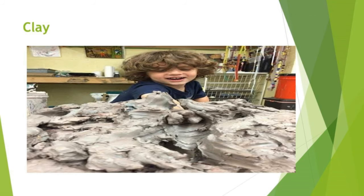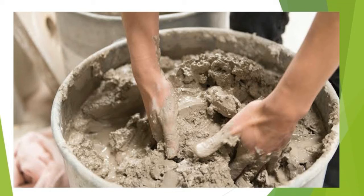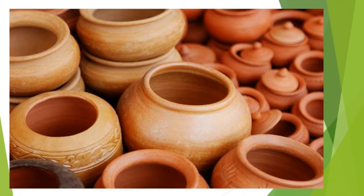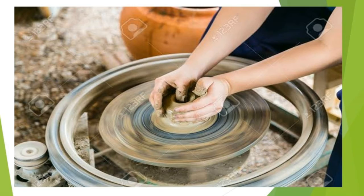Do you like playing with clay? Clay is a natural material — it is a type of soil. When it is mixed with water, it becomes soft. It hardens as it dries. So pots and other things can be made from it. A potter uses a tool called the potter's wheel to make clay pots and other things.